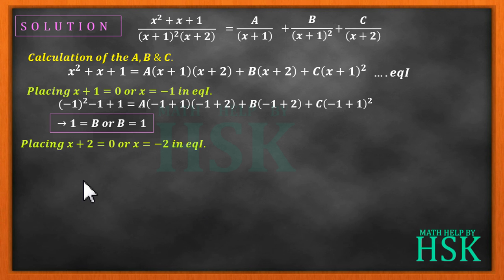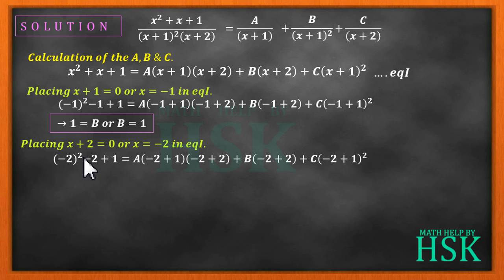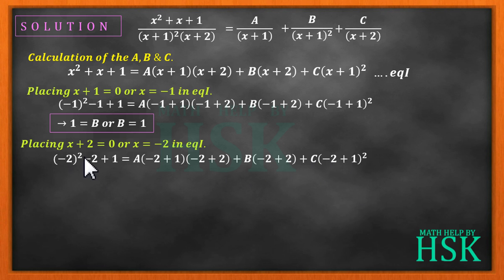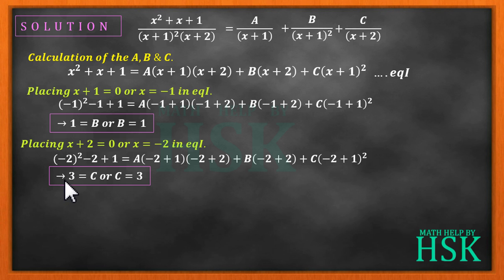Similarly, placing x = -2 in equation 1: (-2)² + (-2) + 1 = A·(-1)·(0) + B·(0) + C·(-1)². So 4 - 2 + 1 = 3, the A and B terms become 0, and we get 3 = C, so C = 3.